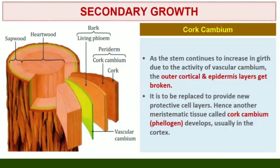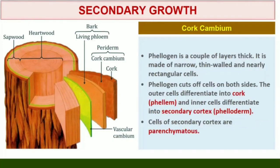Cork Cambium. As the stem continues to increase in girth due to the activity of vascular cambium, the outer cortical and epidermis layers get broken and need to be replaced to provide new protective cell layers. Hence, sooner or later, another meristematic tissue called Cork Cambium or Phellogen develops, usually in the cortex region. Phellogen is a couple of layers thick. It is made of narrow, thin-walled, and nearly rectangular cells. Phellogen cuts off cells on both sides. The outer cells differentiate into Cork or Phellem, while the inner cells differentiate into secondary cortex or Phelloderm.